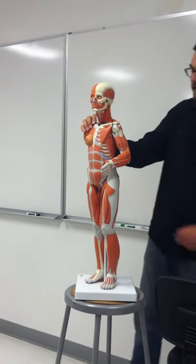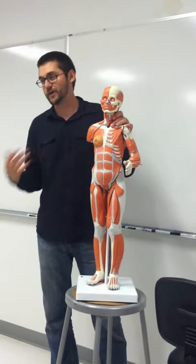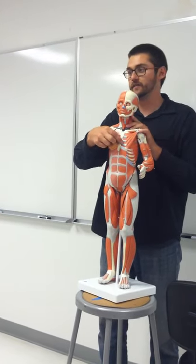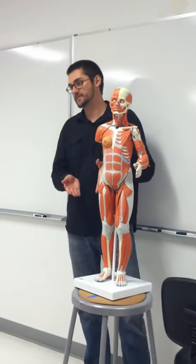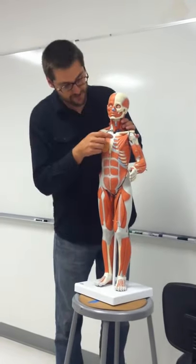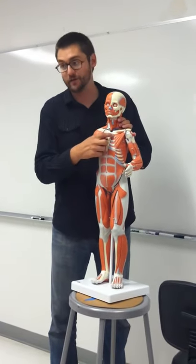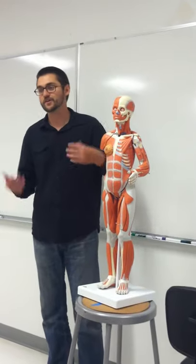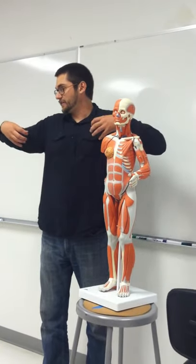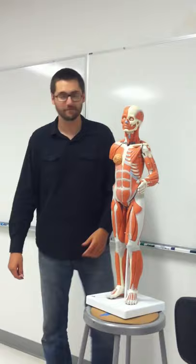Now let's talk about muscles involved in breathing and respiration. We have intercostal muscles — muscles between your ribs. You'll have internal and external intercostal muscles, but don't worry about the difference. Just know as a group they're called the intercostal muscles. External intercostals are for inhaling; internal intercostals are for exhaling — but just know them as a group for the test.